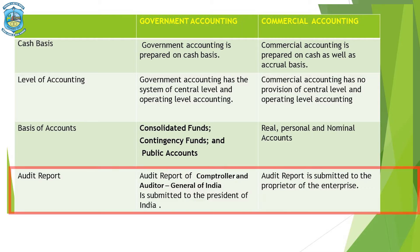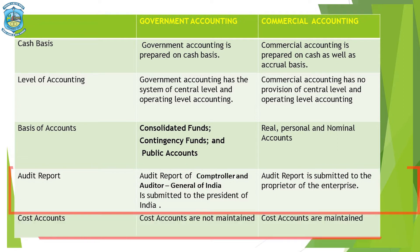Regarding Audit Report: whatever audit is done of a commercial unit, it has to be submitted to the proprietor. But when you talk about a Government Organization, the auditing is done by the Comptroller and the Auditor General of India, and that report has to be submitted to the President of India. The last point is Cost Accounts: Cost Accounting is a part of Commercial Accounting and is prepared in some concerns, but in Government Accounting, Cost Accounting has no place. That is the basic difference between Government Accounting and Commercial Accounting.